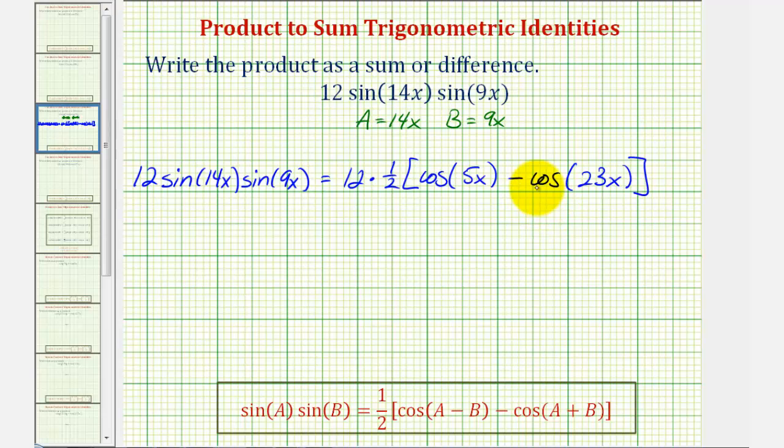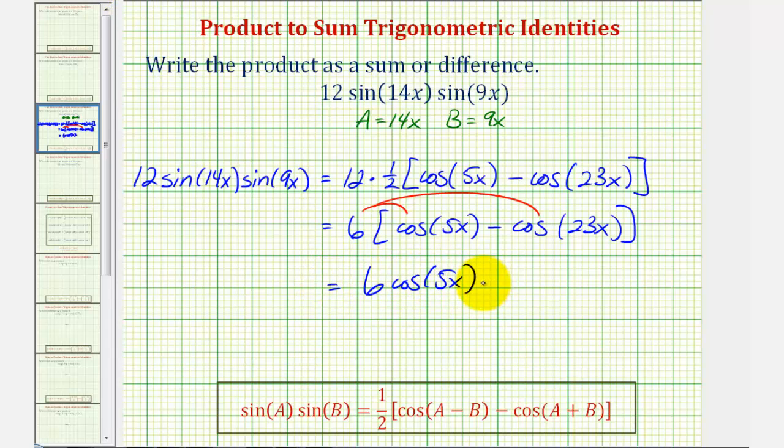Now we just need to simplify. 12 times one-half, of course, is 6. And we still have a product here, so now we'll distribute. So we have 6 cosine 5x minus 6 cosine 23x. Now we have the given product as a difference.